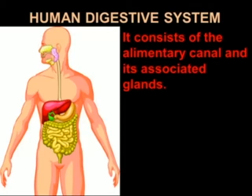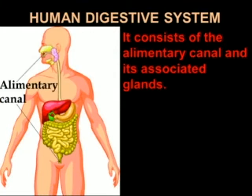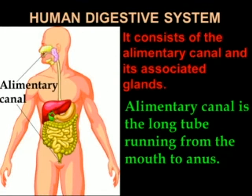Human Digestive System. It consists of the alimentary canal and its associated glands. Here the alimentary canal is shown. The alimentary canal is the long tube running from mouth to anus.